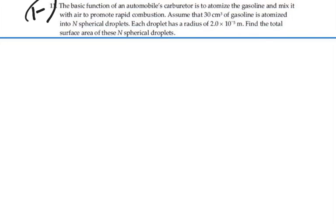Here's problem 111. The basic function of an automobile's carburetor is to atomize the gasoline and mix it with air to promote rapid combustion. Assume that 30 cubic centimeters of gasoline is atomized into N spherical droplets. Each droplet has a radius of 2 times 10 to the minus 5 meters. Find the total surface area of these N spherical droplets.